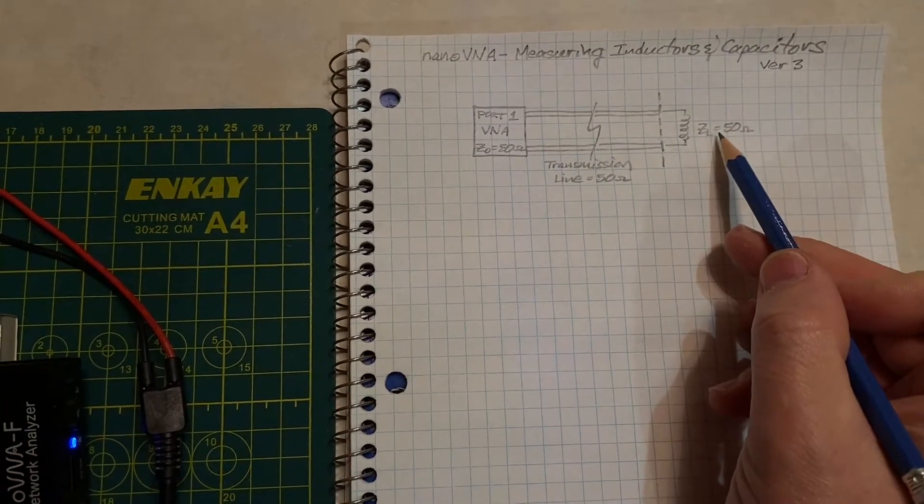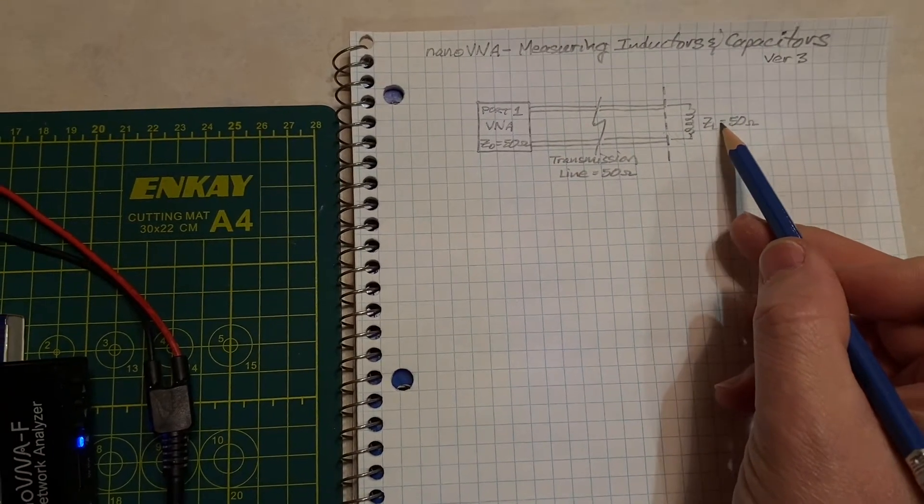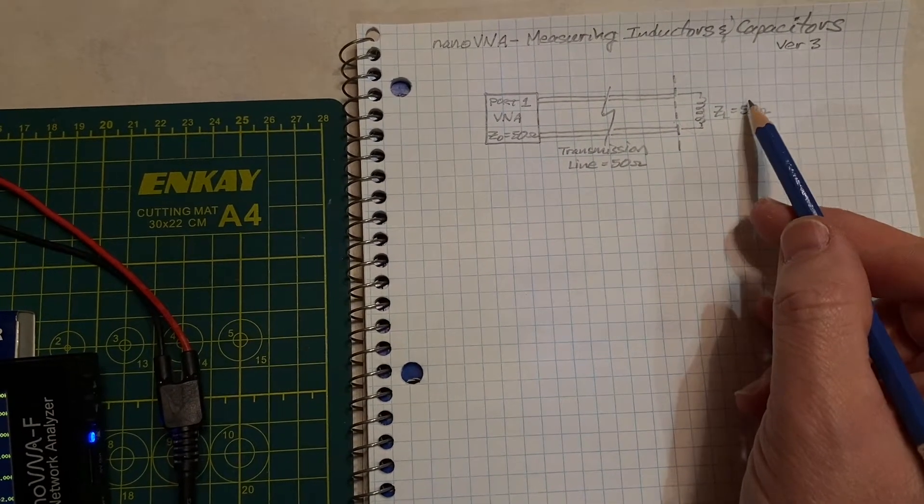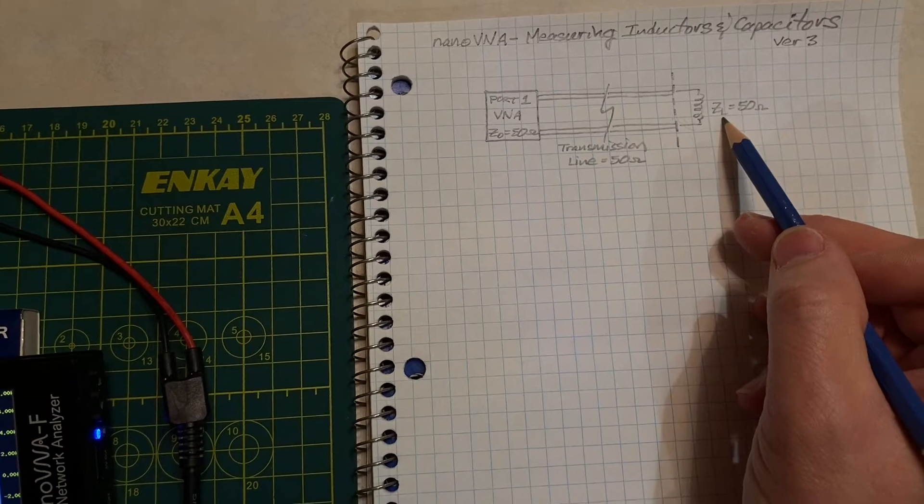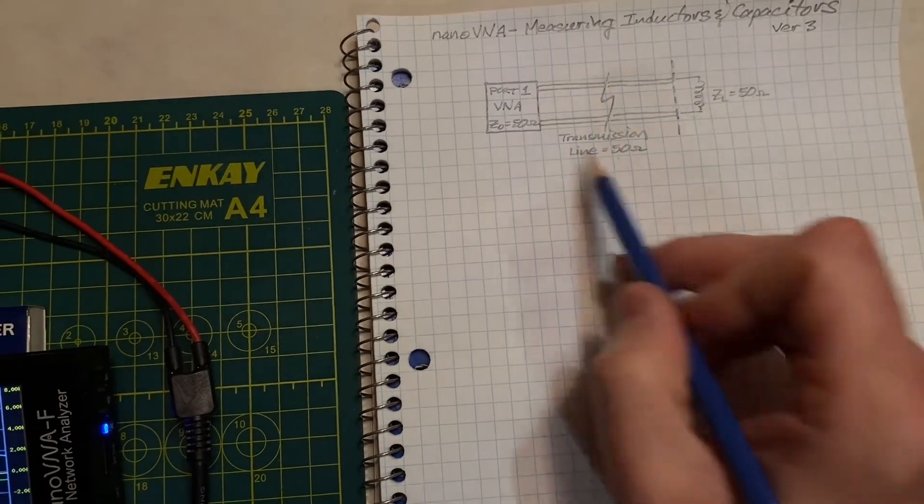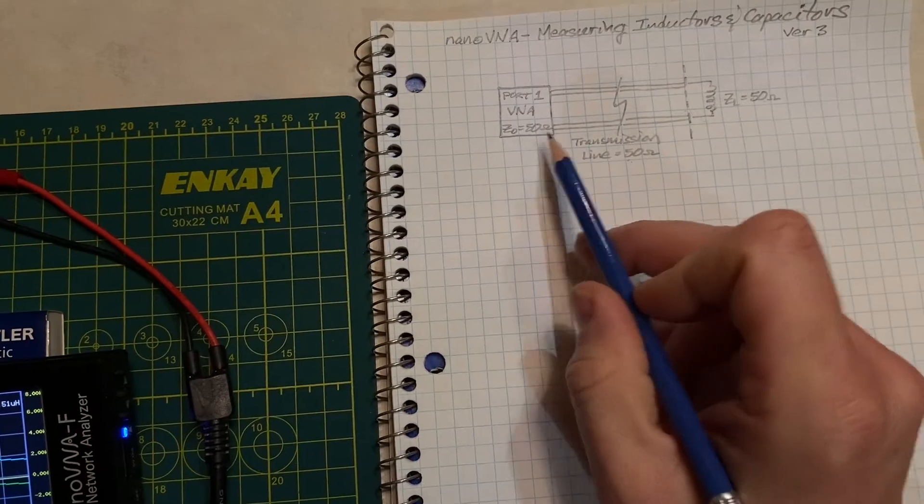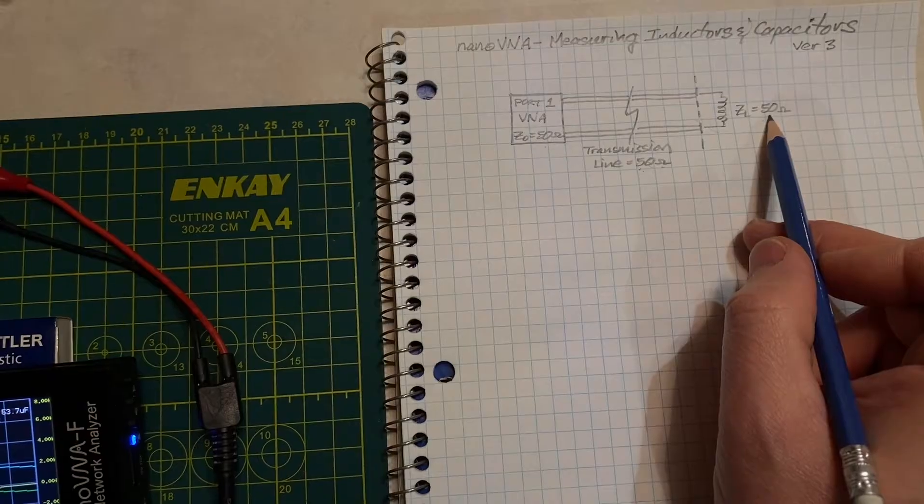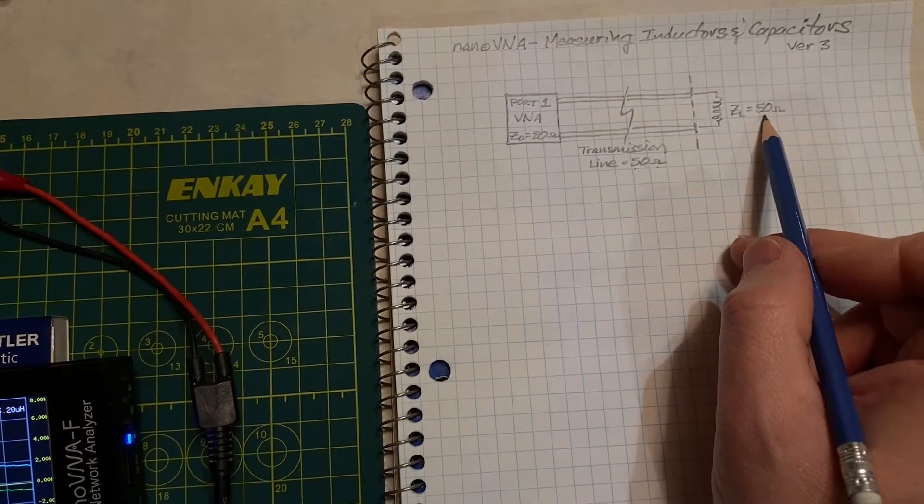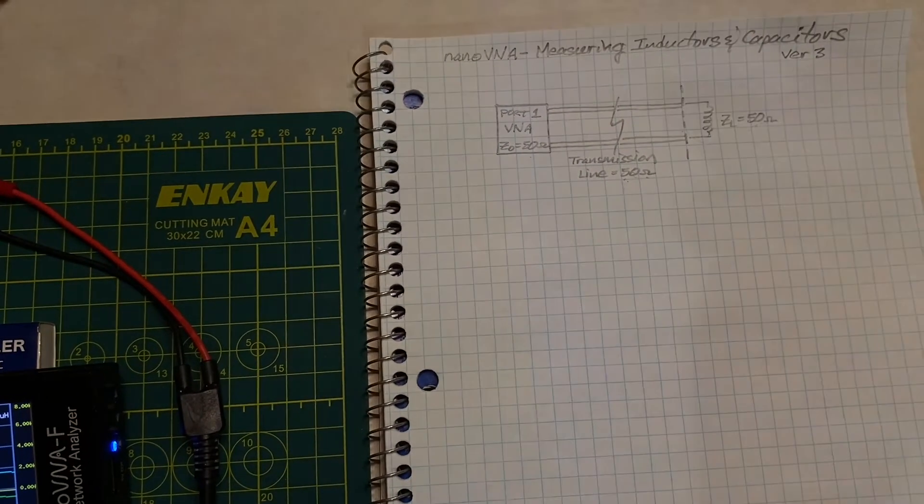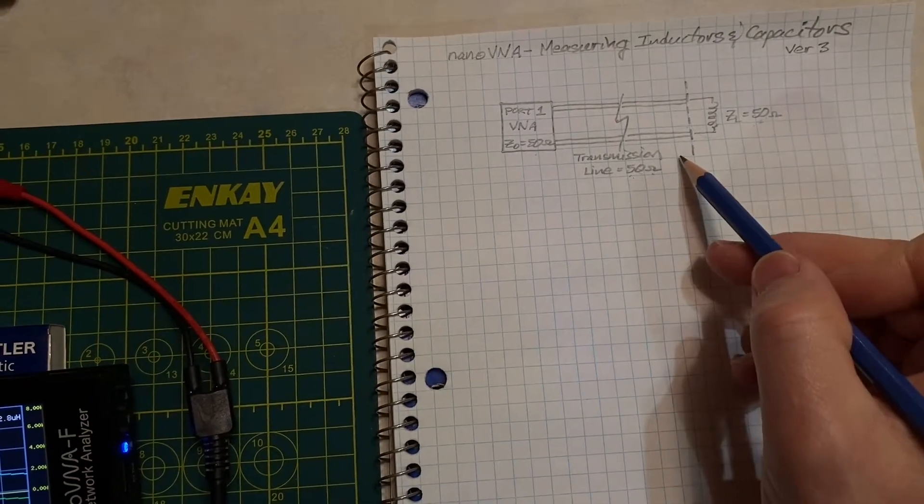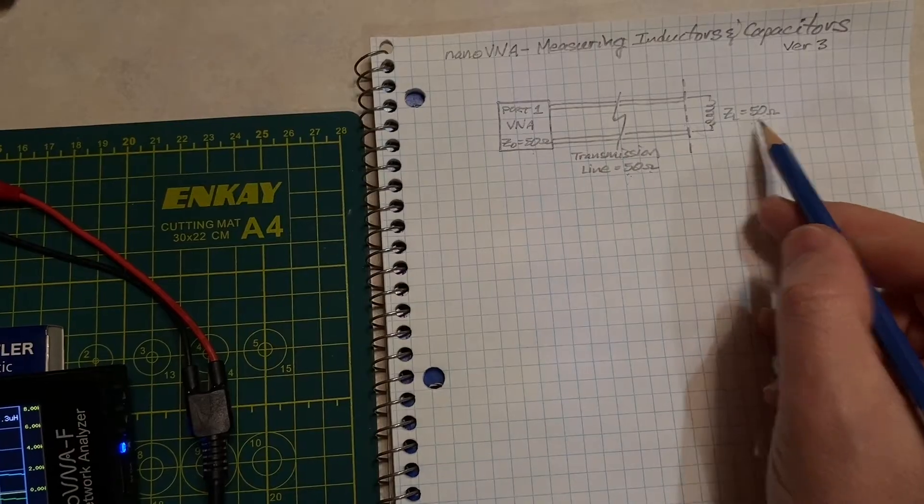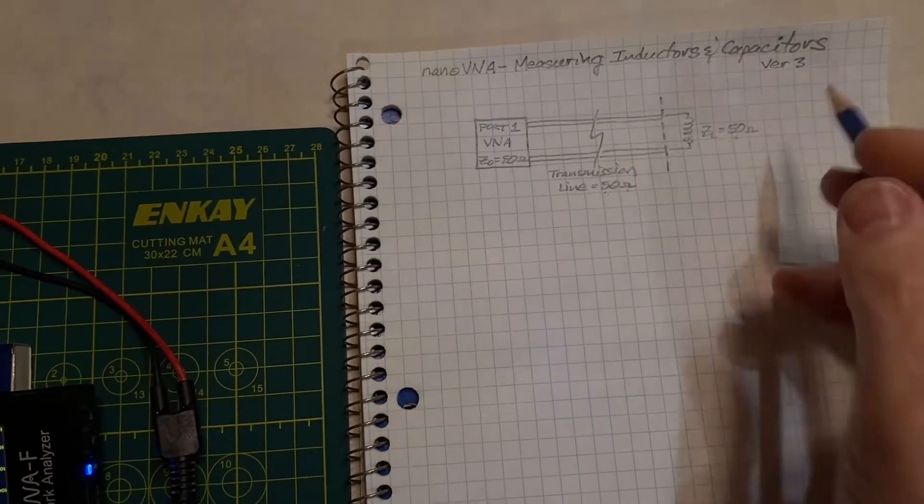What I do is I adjust the Nano VNA so that I'm looking at the values it sees when the impedance of our load is equal to the characteristic impedance of the transmission line and the Nano VNA, which is 50 ohms. This ensures that we are nowhere near that frequency of resonance.